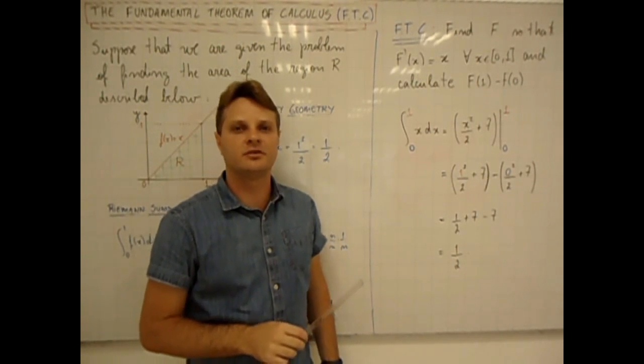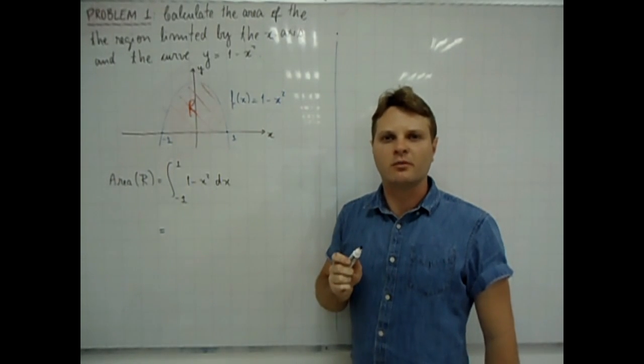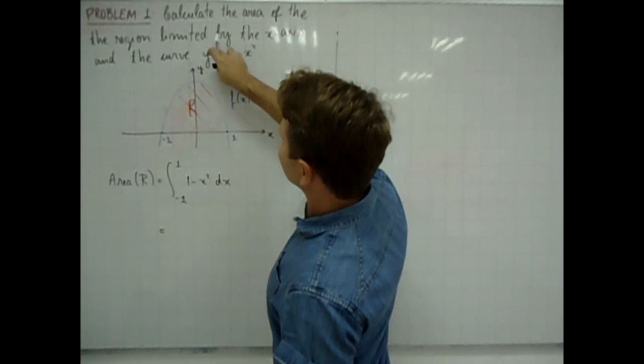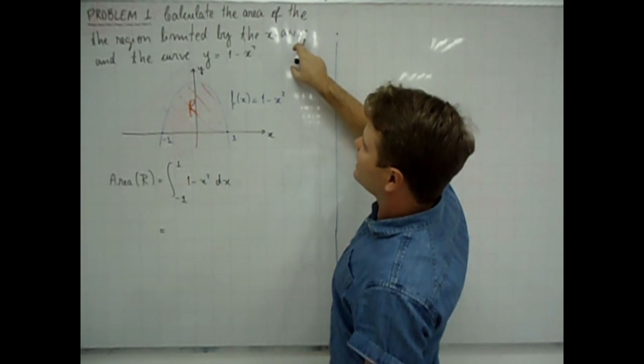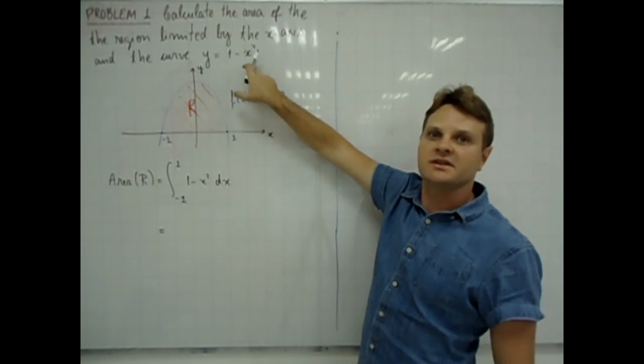So, now we are ready to address a more difficult problem. Let us take a look at problem 1. Here we want to calculate the area of the region limited by the x-axis and the curve given by points x, y so that y is equal to 1 minus x squared.